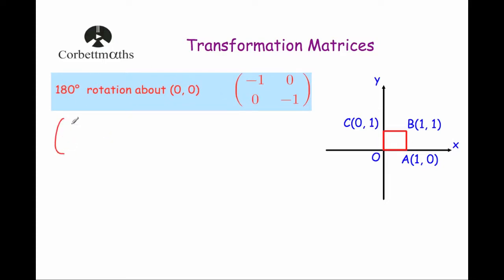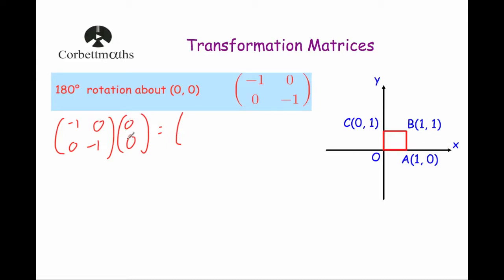So let's first of all take our matrix minus 1, 0, 0, minus 1, and we're going to multiply each of these points by that matrix. Let's start off with the point at the origin, the point 0, 0. Now because the rotation is about 0, 0, this point should stay where it is. So minus 1 times 0 is 0, 0 times 0 is 0, adding them together is 0. And then the second row by the column: 0 times 0 is 0, minus 1 times 0 is 0, so adding them together is 0. So the point at the origin will stay there.